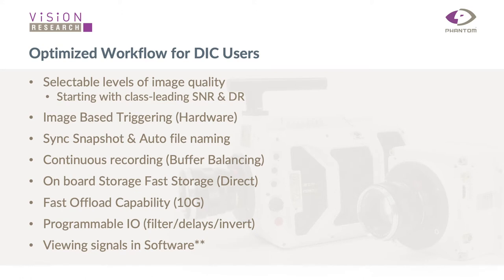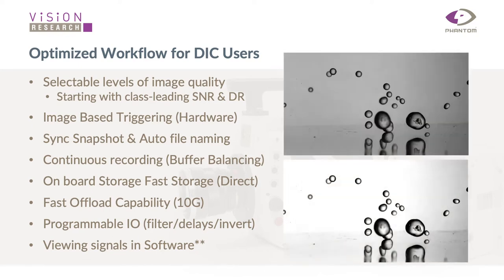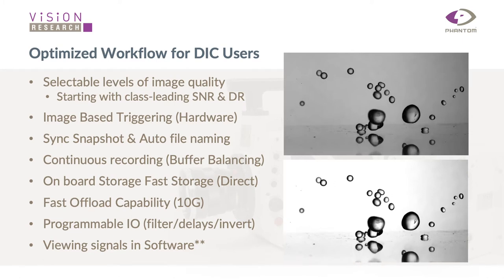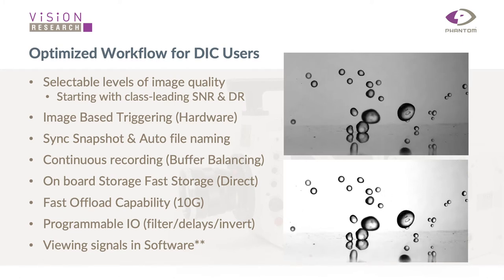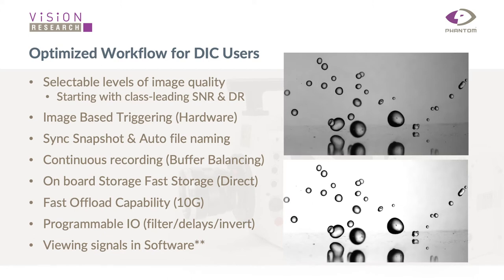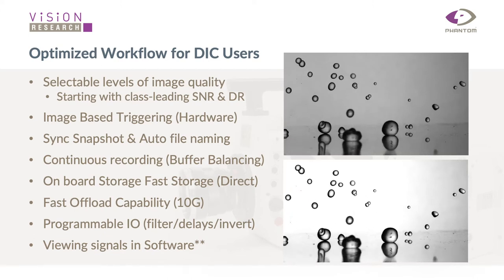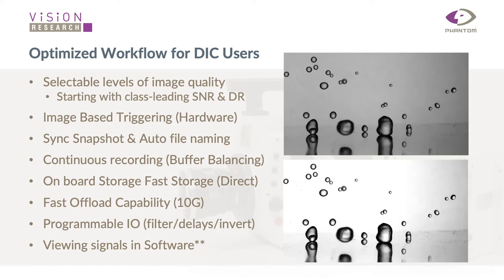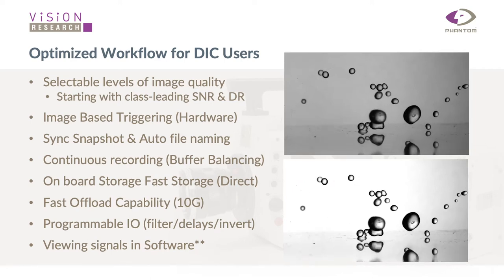Another focus is optimizing the workflow for DIC users. First, we aim to give you the best possible image quality out of the camera — a really good dynamic range and a nice signal-to-noise ratio. As you can see in the video, if the image appears a little too dark, we allow you to digitally enhance it after capture to make it a little brighter. Even when you brighten it, the image quality remains pristine.